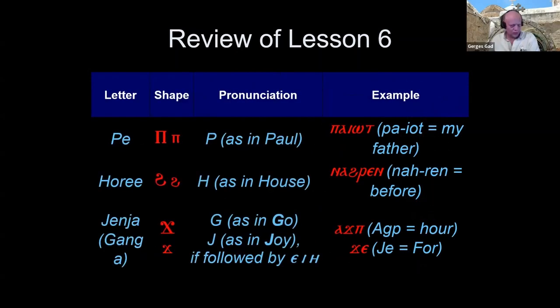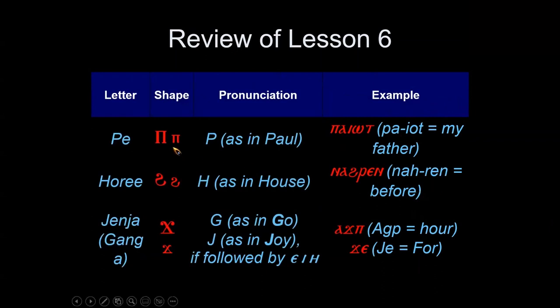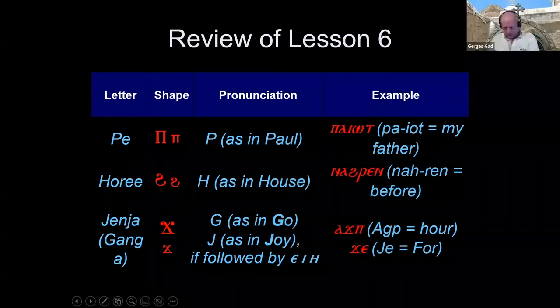Next, Elora. The Pe is pronounced as a P, the Hori is pronounced as an H, and the Jinja is pronounced as a G or a J. Good, thank you.